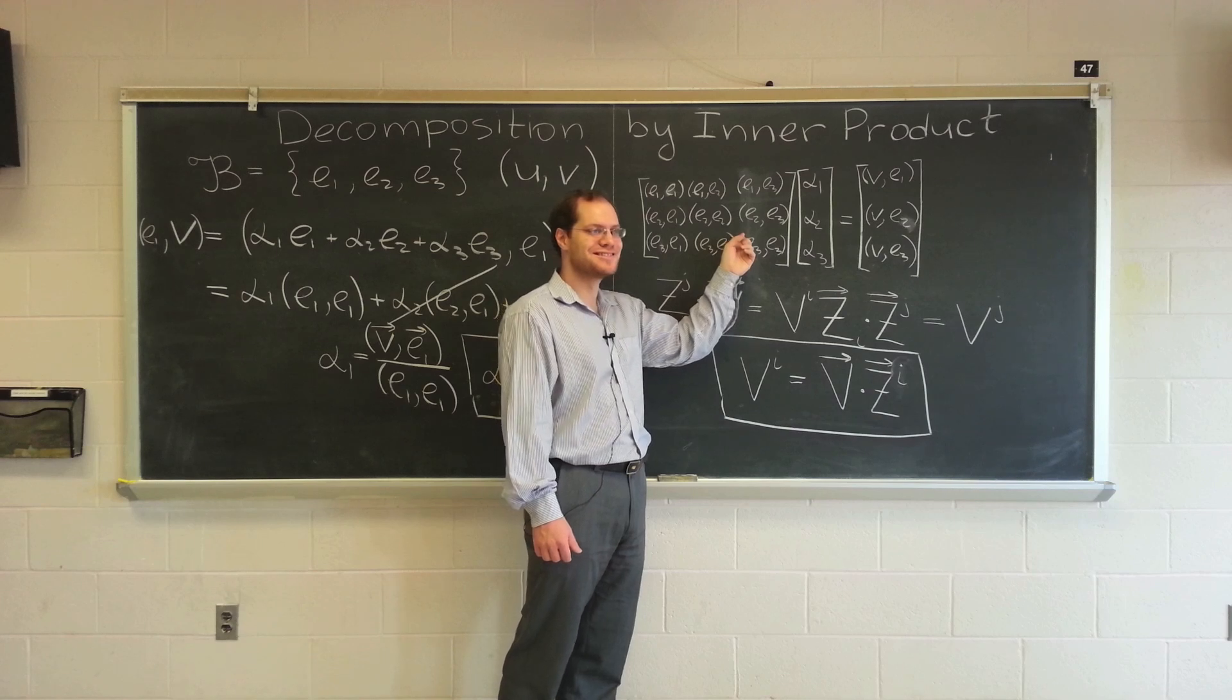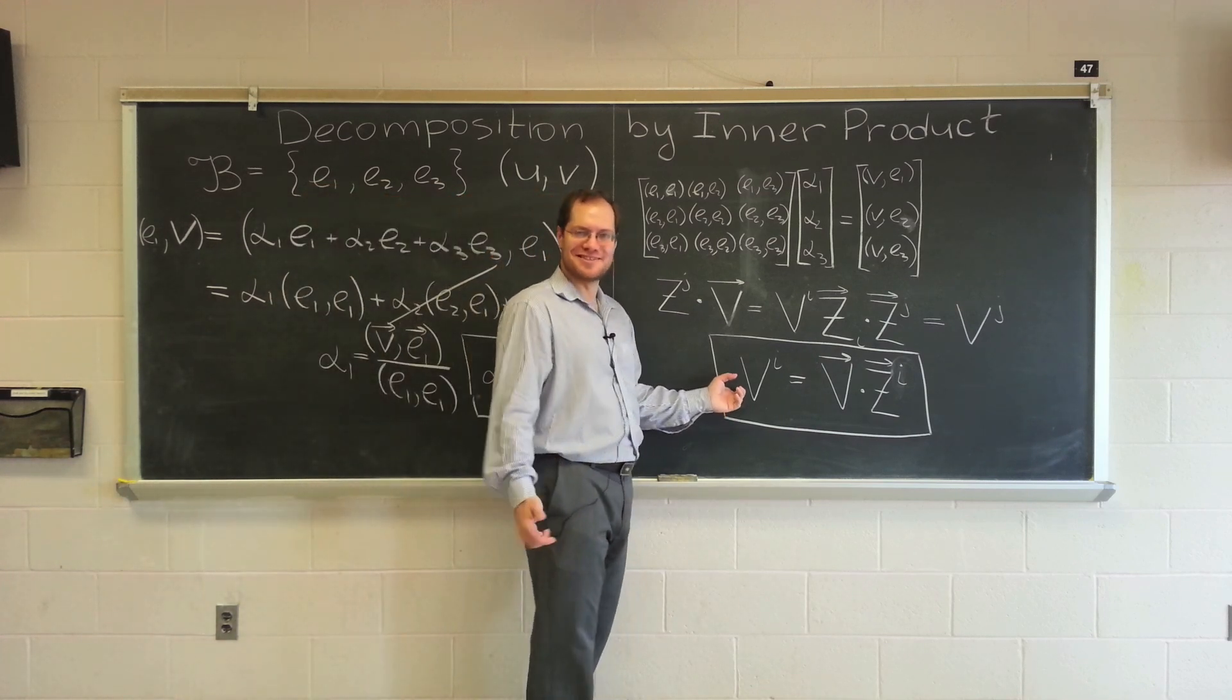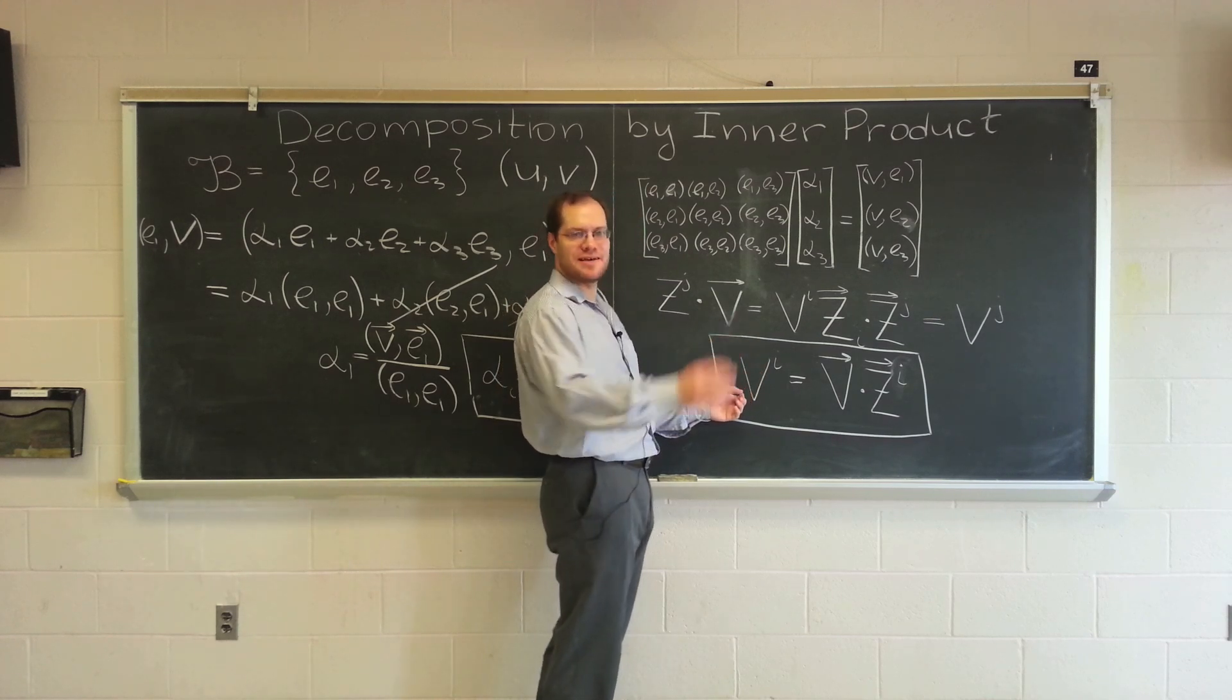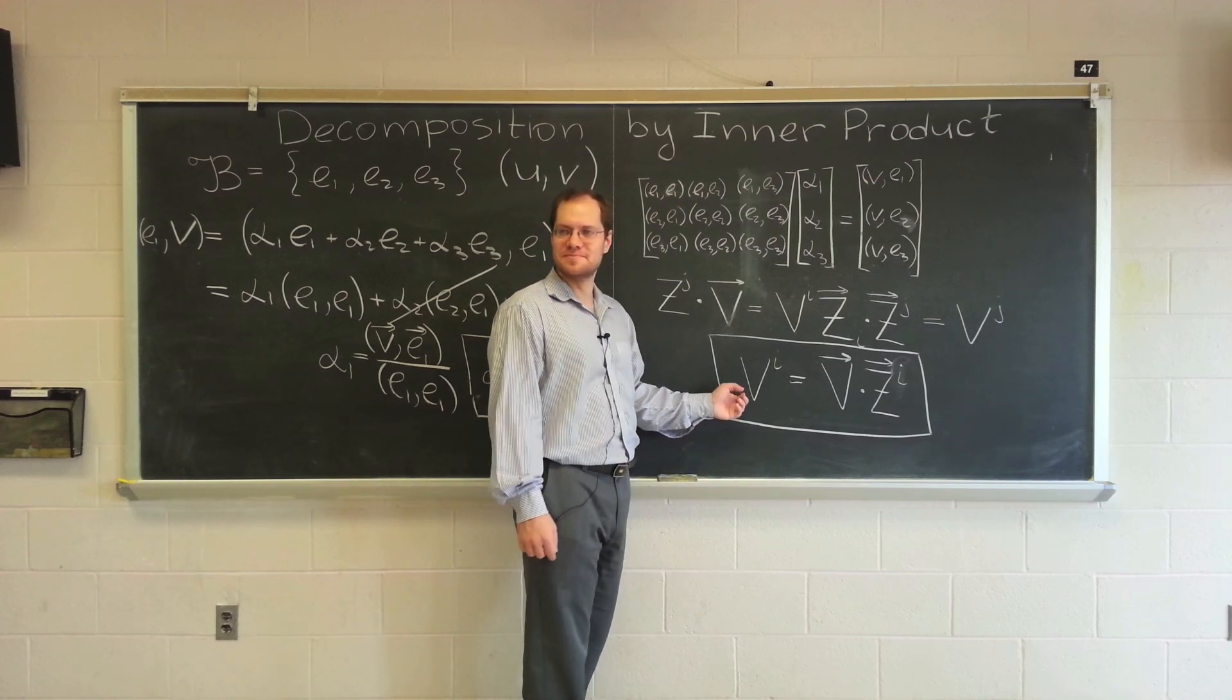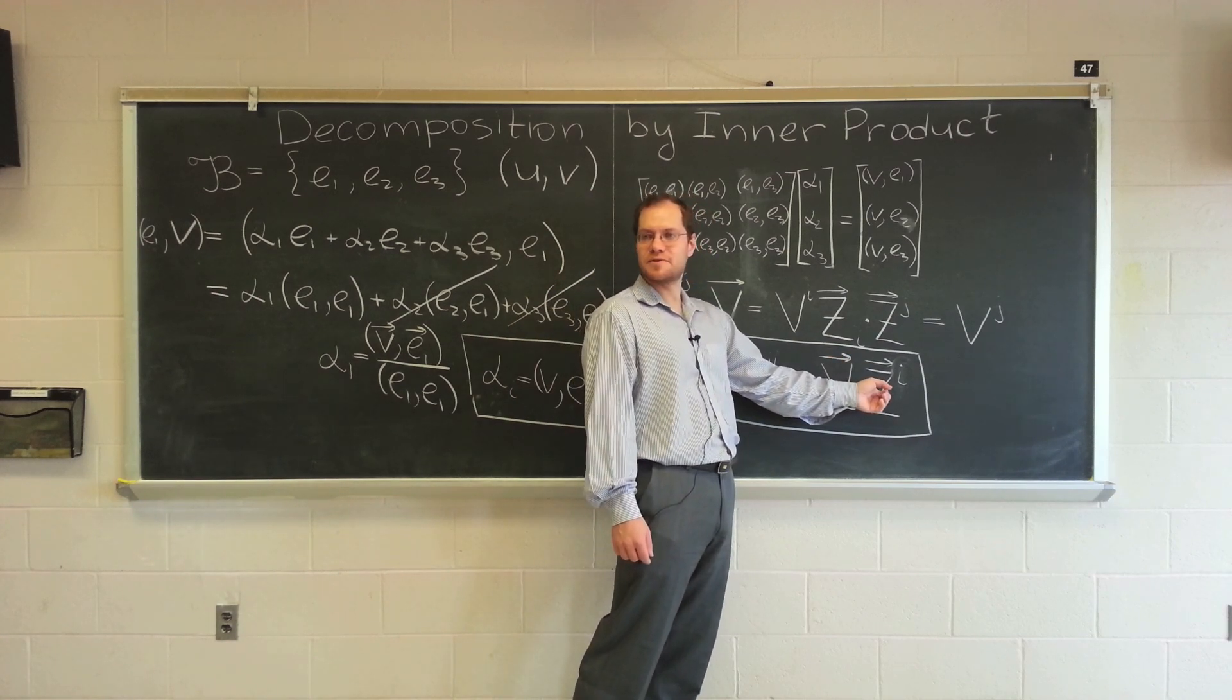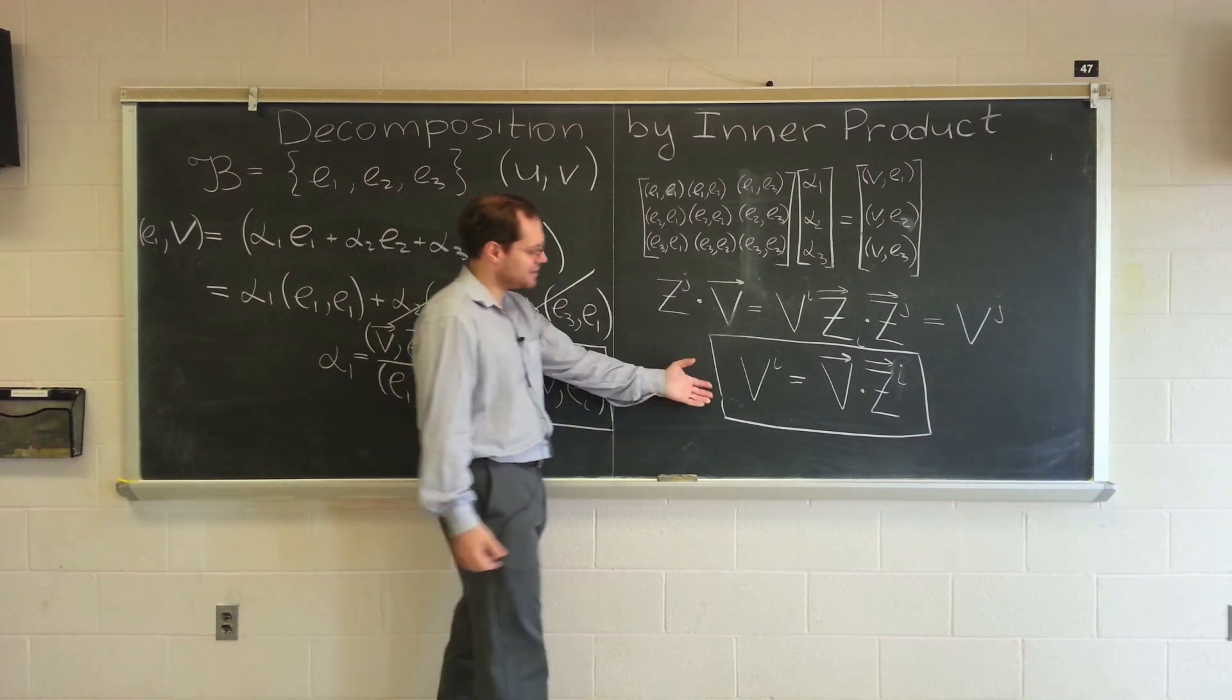But just remember this rule. We're going to use this, if you can call it a rule, all the time for the rest of the class. Not today's lecture, but your lives. The rest of your lives. If you need the component of a vector, just dot it with the corresponding contravariant basis element. That's all. Very powerful, very compact, and very beautiful.